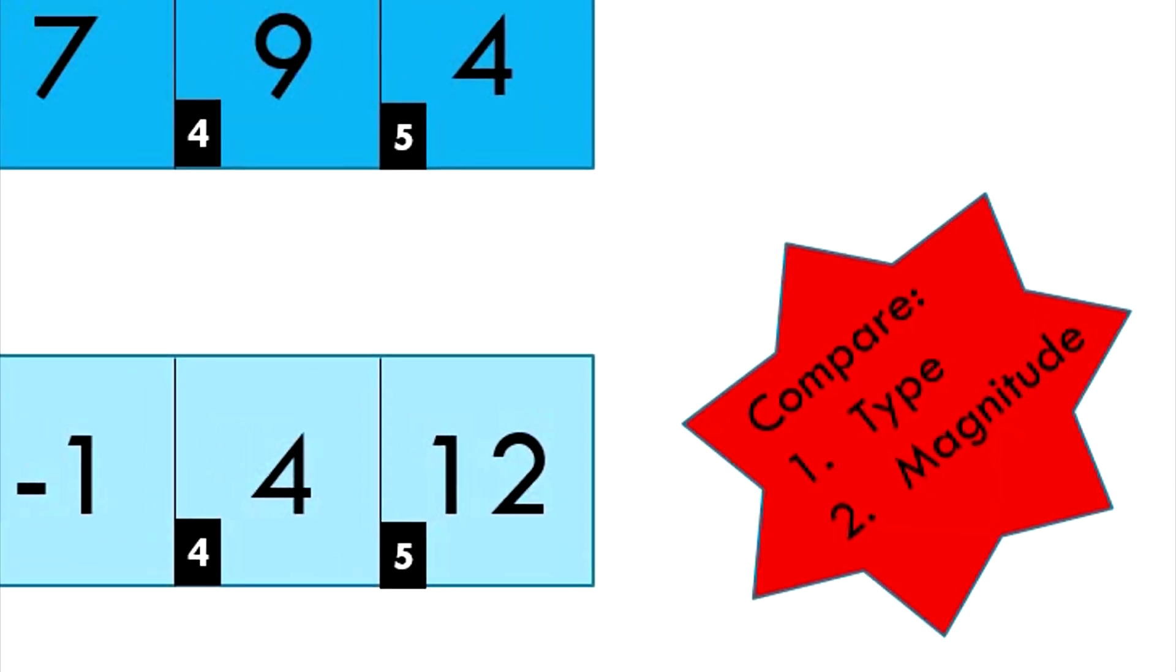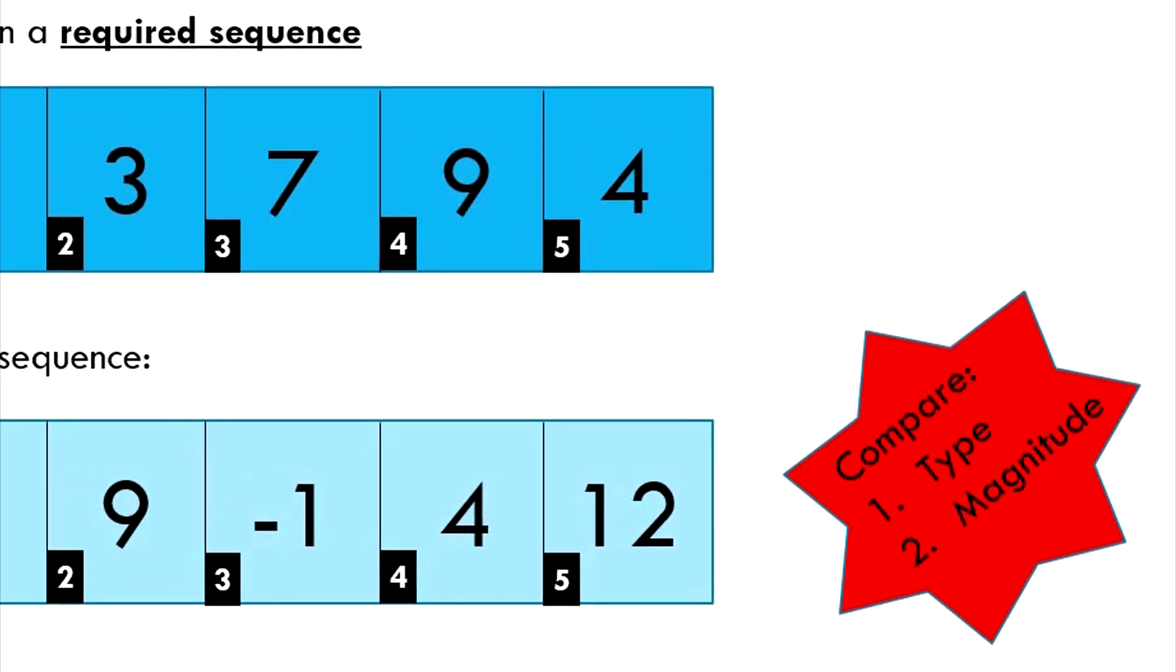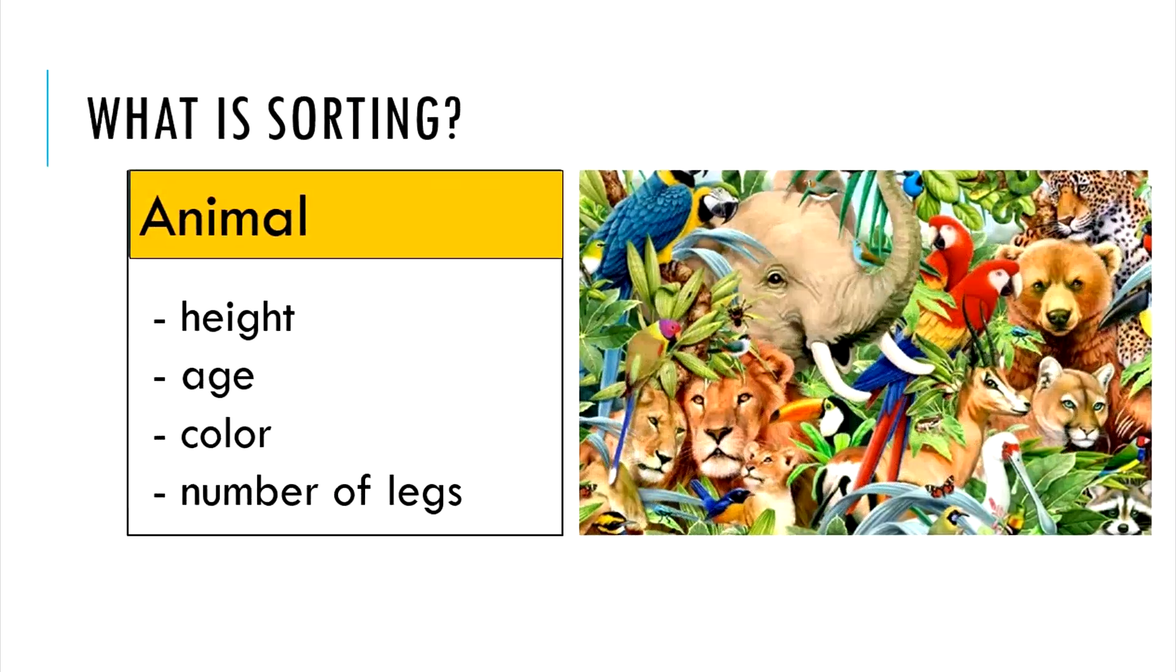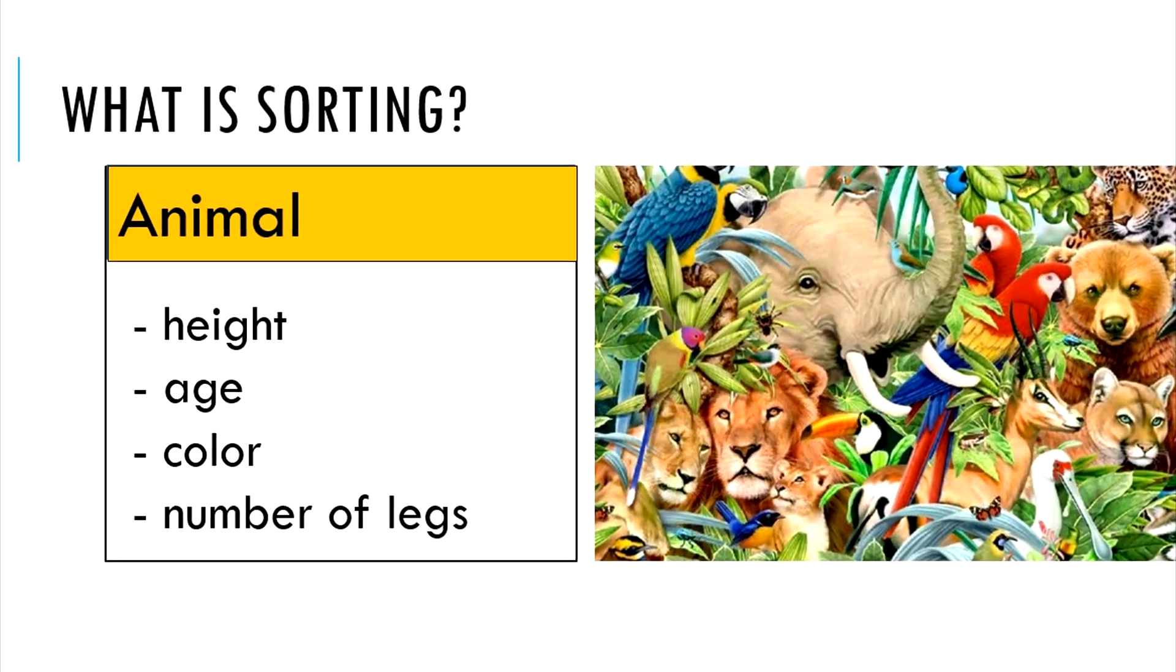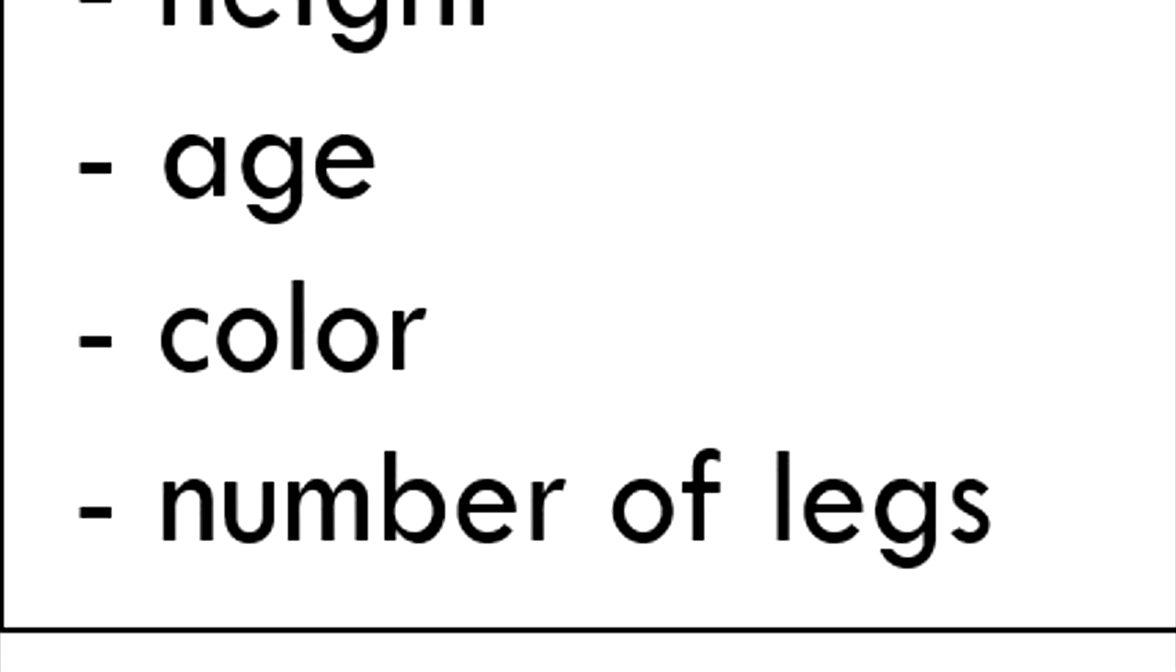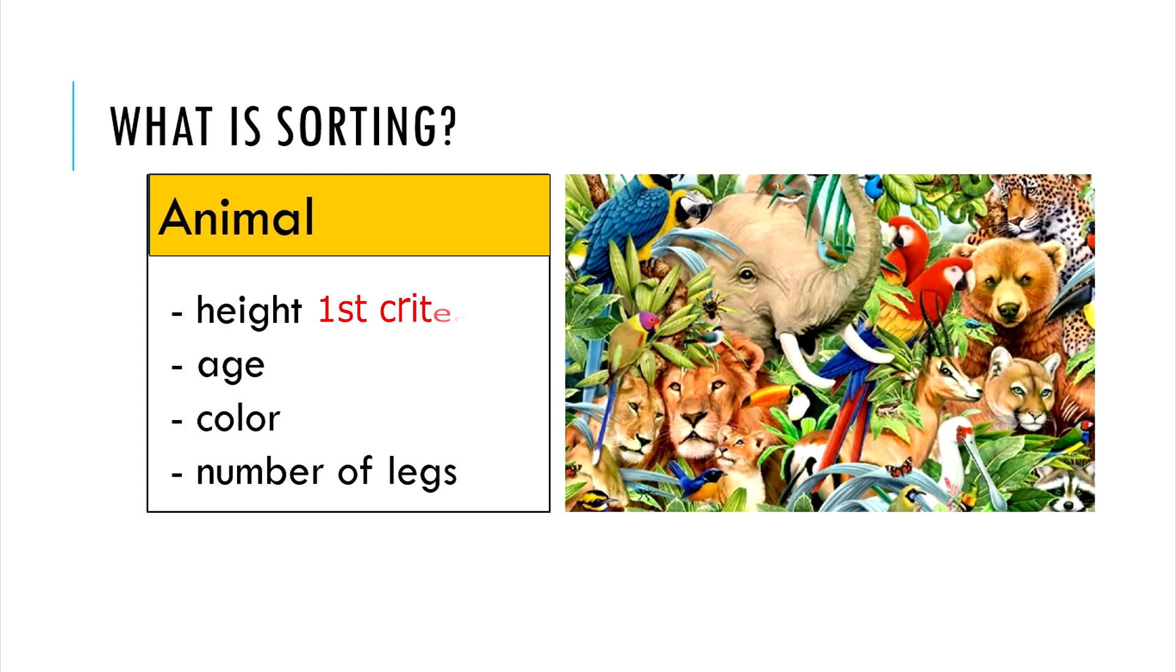The idea of having multiple sorting criteria can help us sort any arbitrary objects. For example, let's say we have an object called animal, with various attributes like height, age, color, and number of legs.